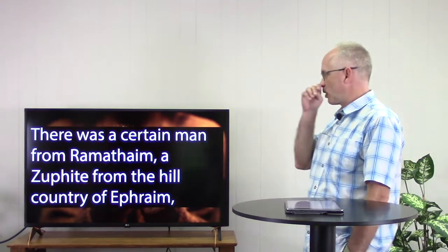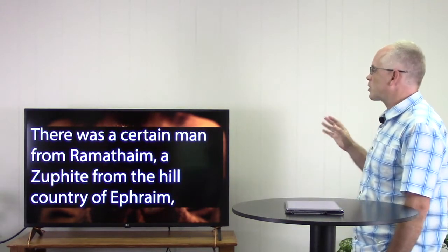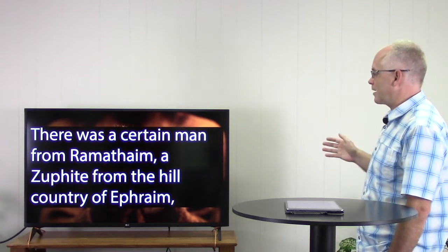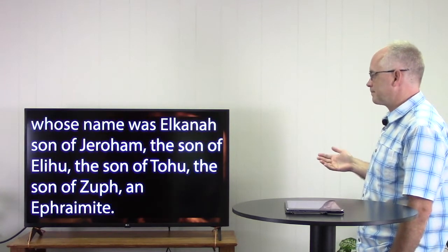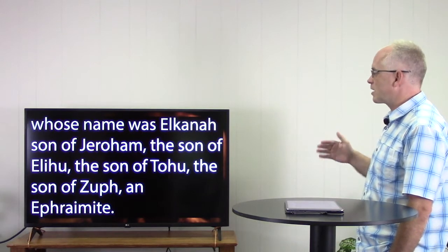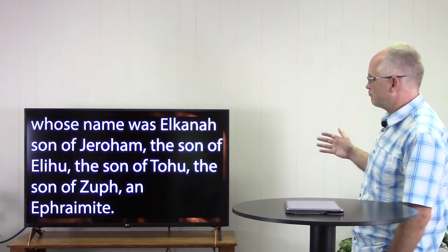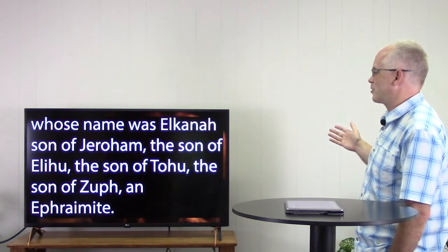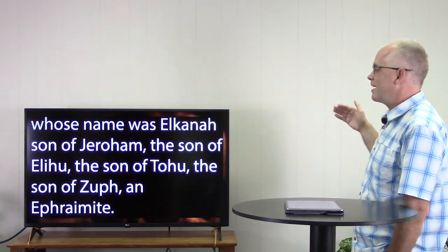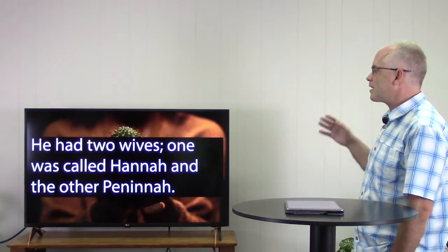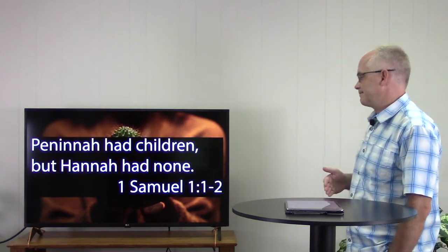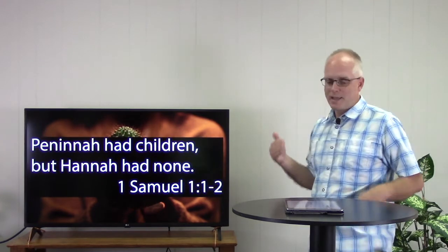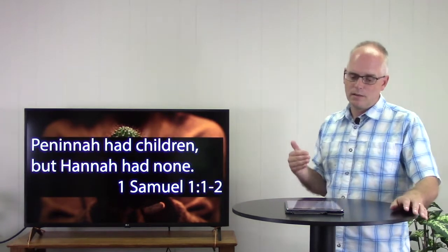Our scripture this morning comes to us from 1 Samuel 1. Hear the word of our Lord for us today. There was a certain man from Ramathaim, a Zuphite from the hill country of Ephraim, whose name was Elkanah, son of Jeroham, the son of Elihu, the son of Tohu, the son of Zuph, an Ephraimite. He had two wives. One was called Hannah, and the other, Peninnah. Peninnah had children, but Hannah had none.